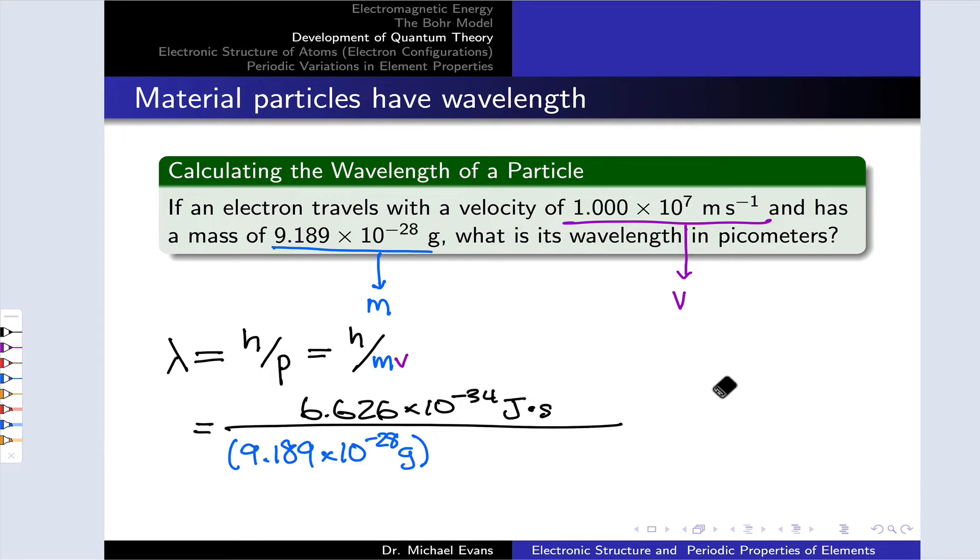The mass is in grams and the velocity in meters per second. If we expand out those joule units and think about unit cancellations here, this is going to give rise to length units overall in units of meters. This comes out to 7.274 times 10 to the negative 11th meters or 72.7 picometers.